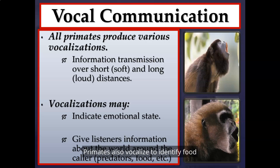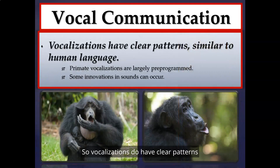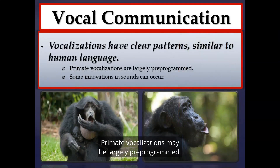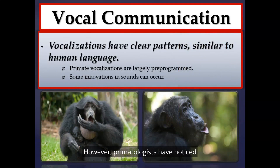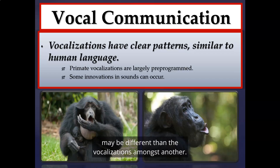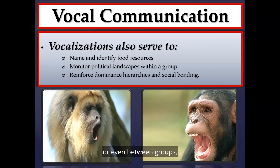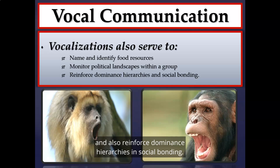Primates also vocalize to identify food, alerting the entire group to a good patch of fruit. Vocalizations have clear patterns similar to human language and may be largely pre-programmed, but primatologists have noticed that innovations in sound can occur — another form of evidence for culture, as vocalizations among one chimpanzee group may differ from another. Vocalizations can also serve to name food resources, monitor political landscapes within and between groups, and reinforce dominance hierarchies and social bonding.